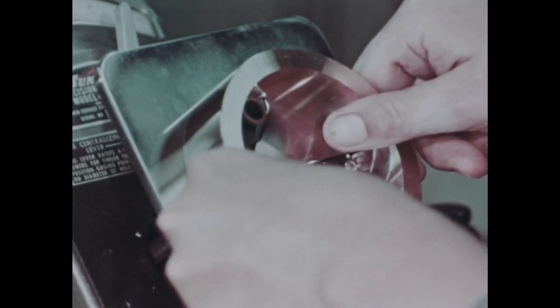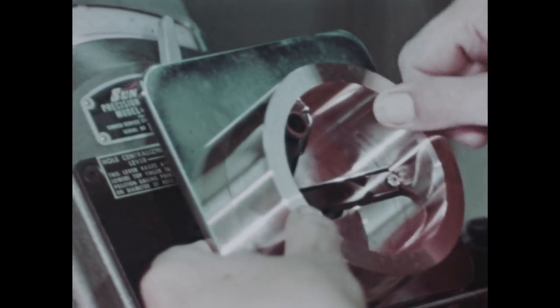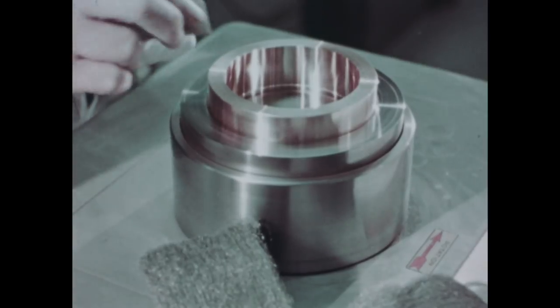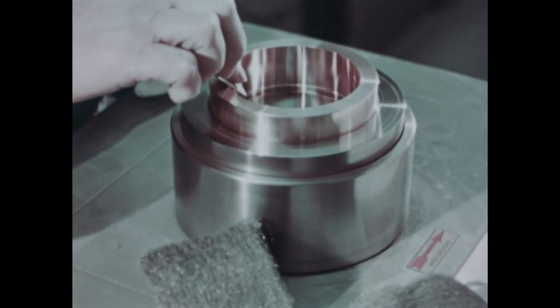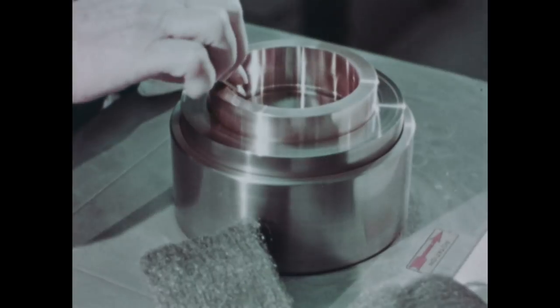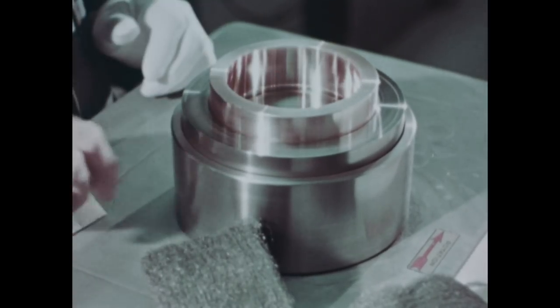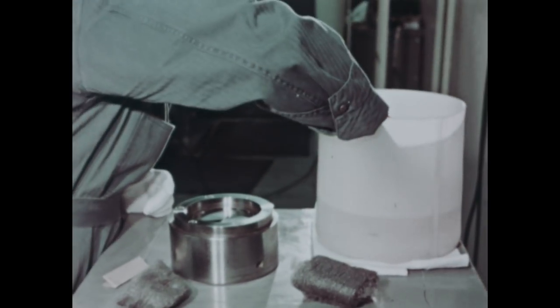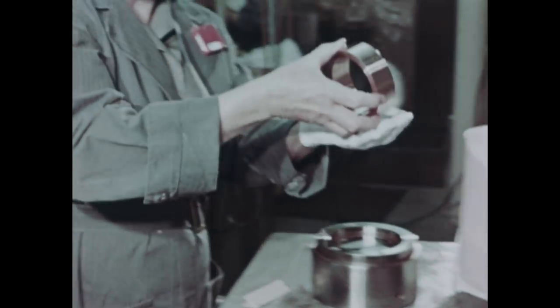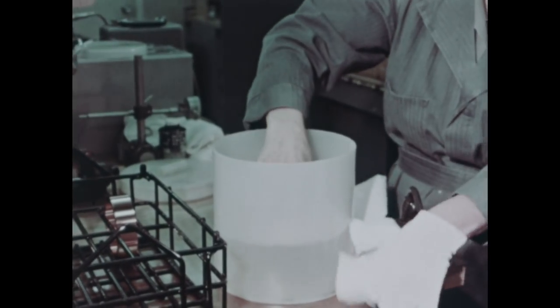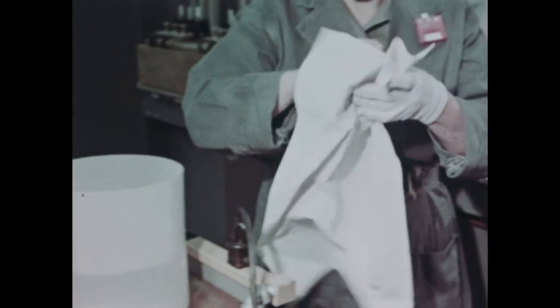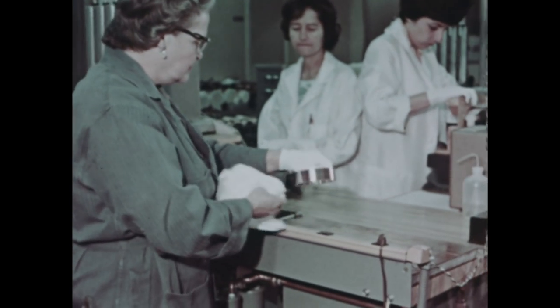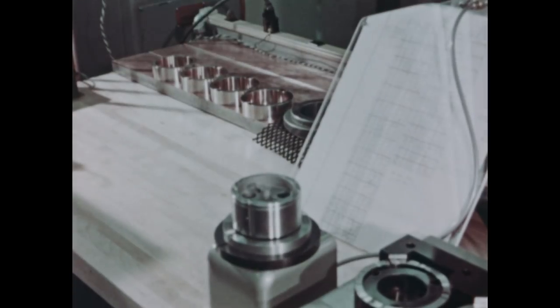After machining, the part is checked to verify size. It is then deburred and the edges are blended in. Although this operation appears to be a coarse one, it only removes about one millionth of an inch. The part is now degreased. From this point on, it must not be touched by bare hands. A fingerprint would deposit enough acid to etch the finely finished copper, making it unacceptable.